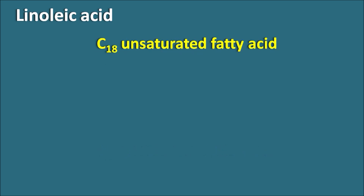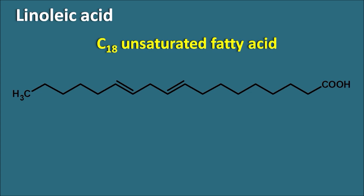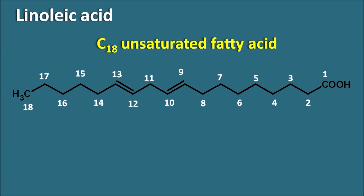Linoleic acid is a C18 unsaturated fatty acid with two double bonds. Starting the numbering from the carboxylic acid end: 1, 2, 3, 4, 5, 6, 7, 8, and 9 — one double bond is present at the ninth position. Continuing: 10, 11, 12 — another double bond is present at the 12th position. Then 13, 14, 15, 16, 17, and 18. So it is a C18 unsaturated fatty acid with double bonds at the ninth and 12th positions.